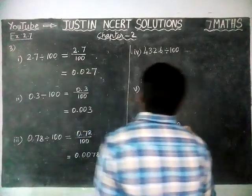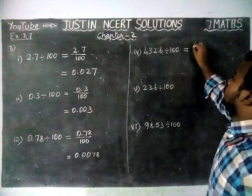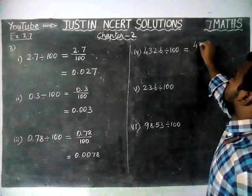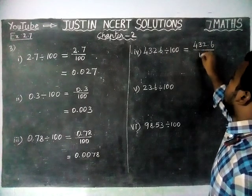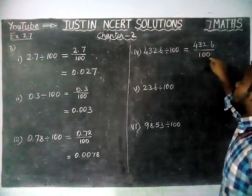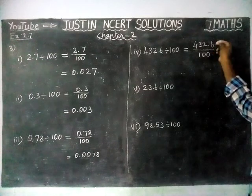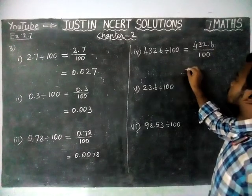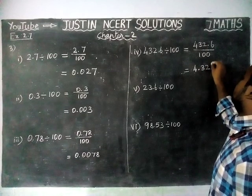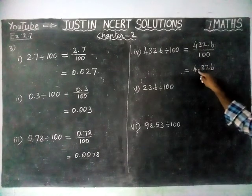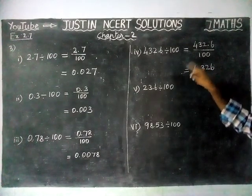Fourth question: 432.6 divided by 100. We have two zeros, so we have to move two steps to the left-hand side. The answer is 4.326.